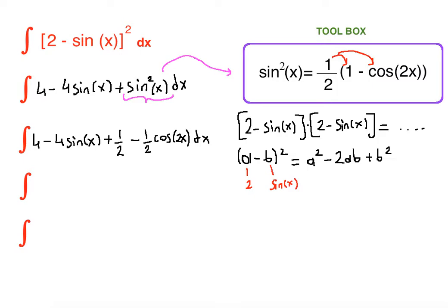Now we're going to combine the like terms. 1/2 and 4 are constants that we can combine, so 4 plus 1/2 is 9/2. We have -4sin(x) here minus 1/2·cos(2x), dx. Now we're going to take antiderivatives of each term.